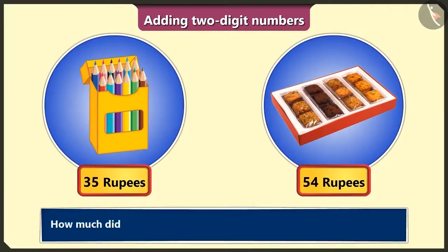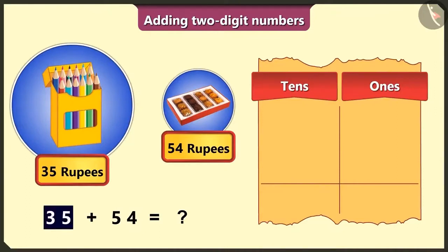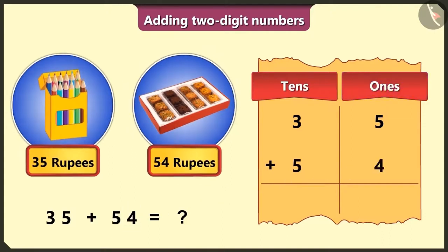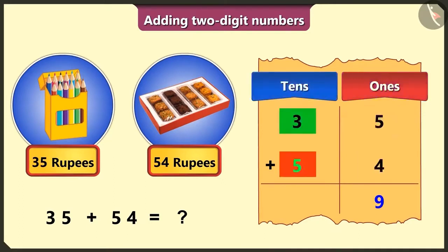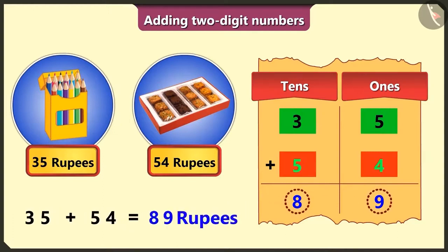And this cookie box by giving 2 notes of Rs. 20, 1 note of Rs. 10, and 2 coins of Rs. 2 — i.e., by giving Rs. 54. So tell me, how much did I pay in total for both these items? The price of the pencil box is Rs. 35. To write Rs. 35, we will write 3 in the tens box and 5 in the ones box. And the price of the cookie box is Rs. 54 — we will write 5 in the tens box and 4 in the ones box. Now you add both these numbers. In the ones box, the numbers 5 and 4 will add up to form 9. And in the tens box, 3 and 5 will add up to form 8. So adding Rs. 35 and Rs. 54 is Rs. 89, which is the total value paid for the items.